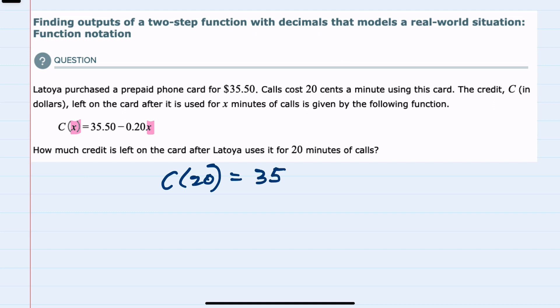That would give us $35.50 minus $0.20 times X, which is 20. We then follow the order of operations.